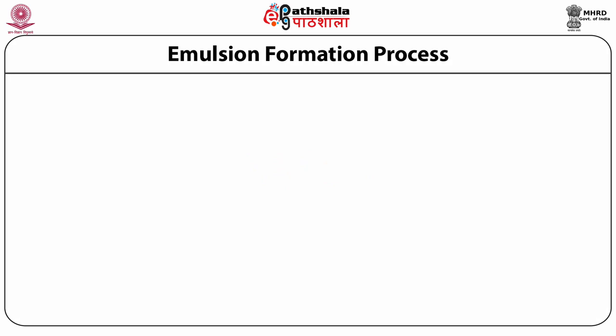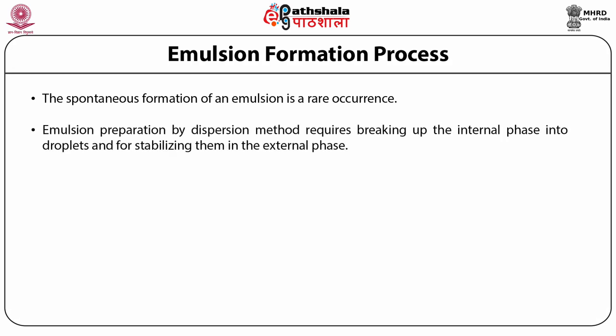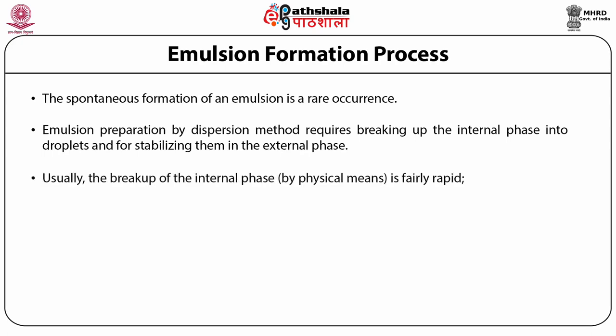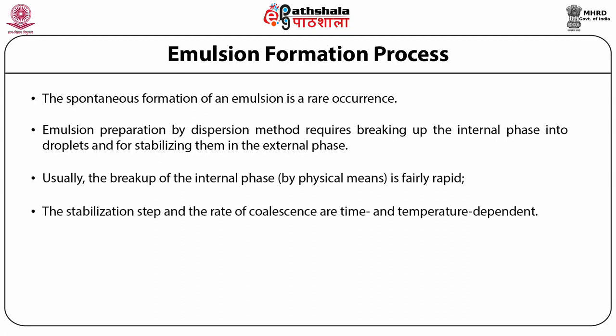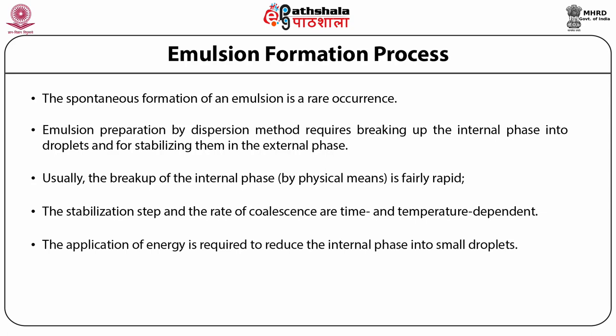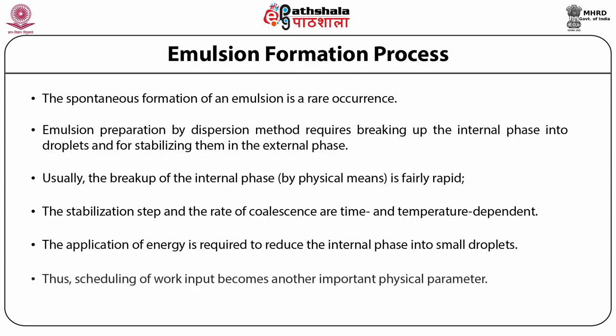The spontaneous formation of an emulsion is a rare occurrence. Emulsion preparation by dispersion method requires breaking up the internal phase into droplets and stabilizing them in the external phase. Usually, the breakup of the internal phase by physical means is fairly rapid. The stabilization step and the rate of coalescence are time- and temperature-dependent processes. The application of energy is required to reduce the internal phase into small droplets, making the scheduling of work input another important physical parameter.